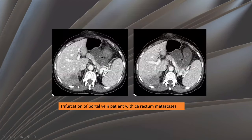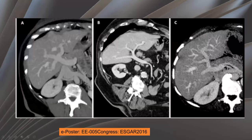Here, a patient with carcinoma of the rectum and metastasis to the subhepatic region of the liver, with a trifurcation of the portal vein — this is the posterior branch, this is the anterior branch, and this is the left branch. Here are additional examples from the literature showing the trifurcation of the portal system, and the configuration where the posterior segment arises from the main portal vein and the right anterior segment arises from the left portal vein.